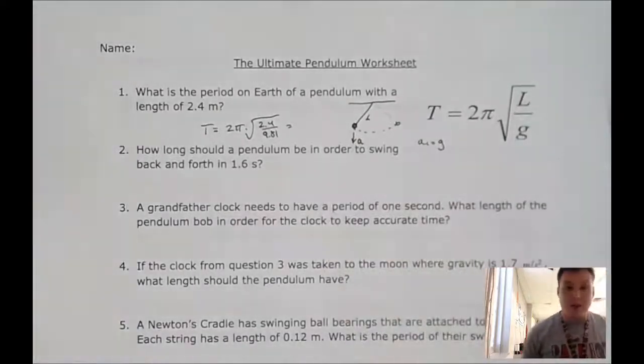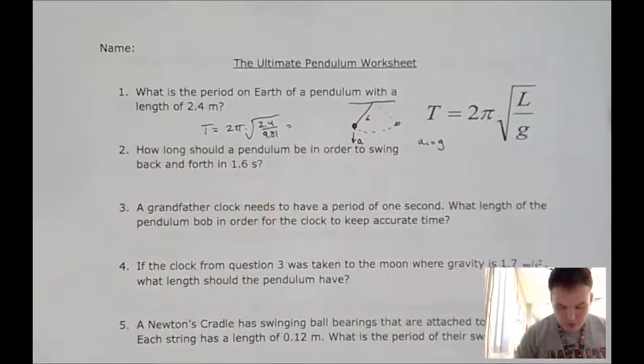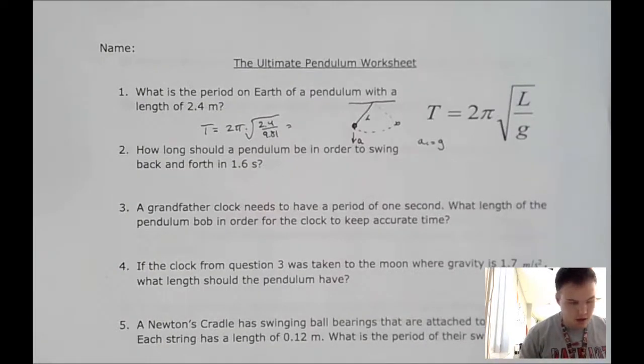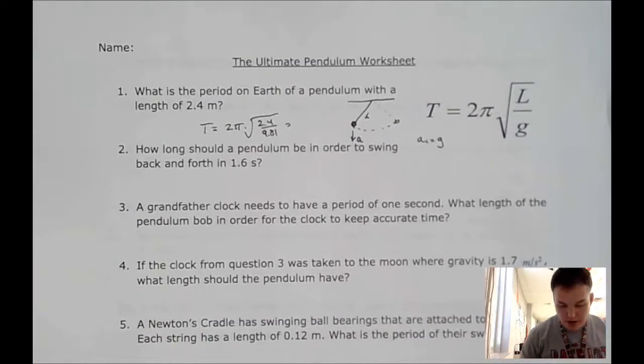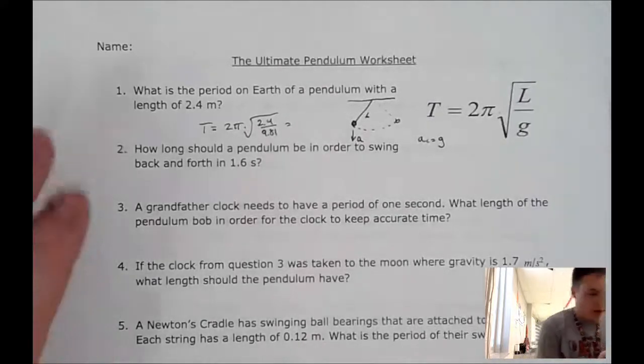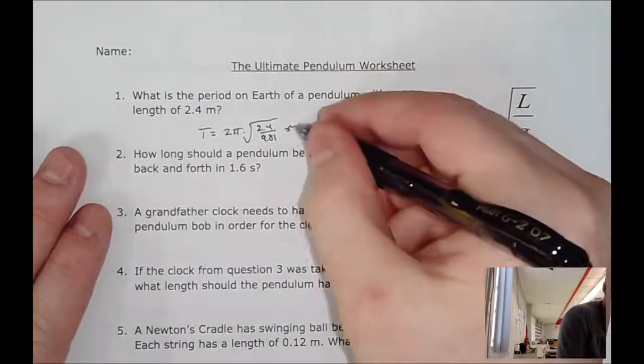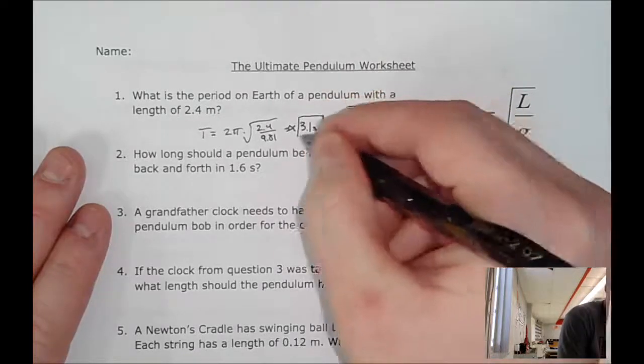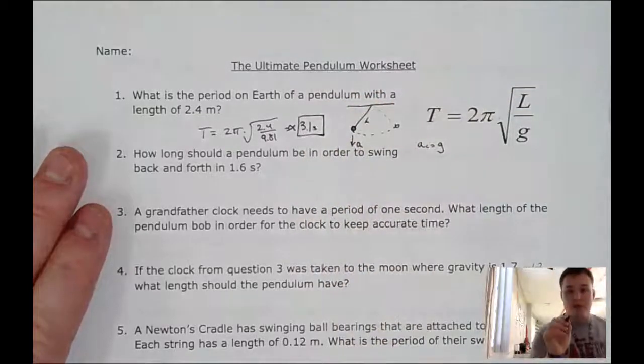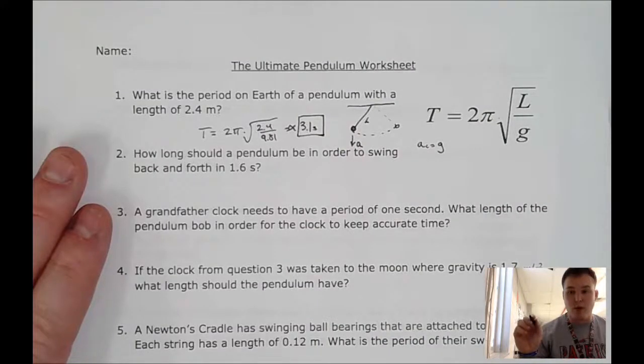So for this problem, we're going to take 2π and we're going to multiply that by the square root of 2.4 divided by 9.81. And however we do that, we get roughly approximately 3.1 seconds. So it will take that pendulum 3.1 seconds to make one complete oscillation.